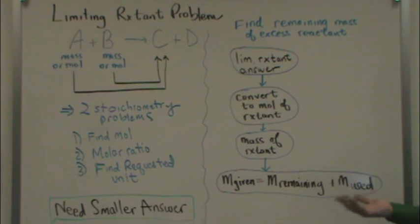So, one of the reactants, either A or B, will be the limiting reactant, the one that generates less C. And the other reactant, the one that generates more of the product, will be the reactant in excess.